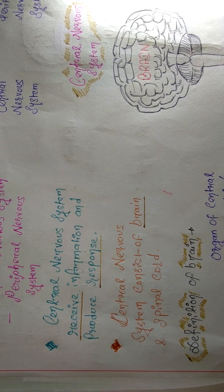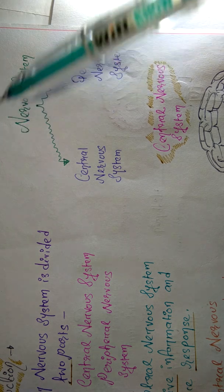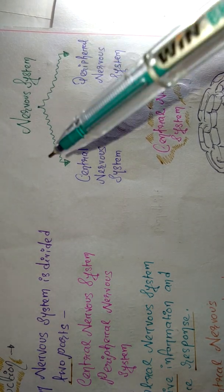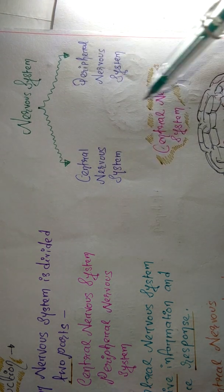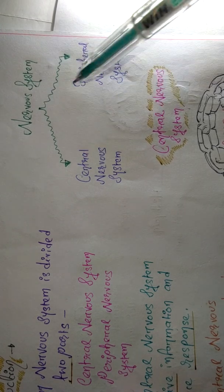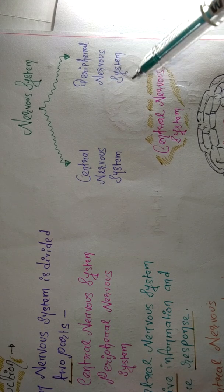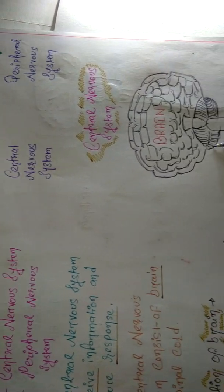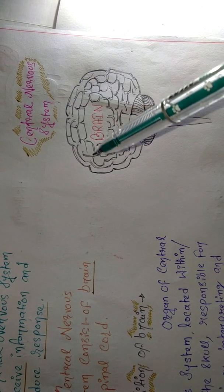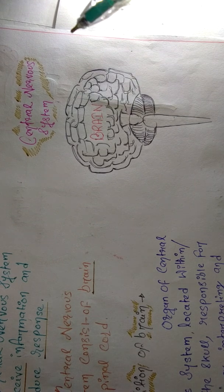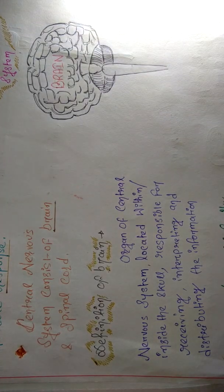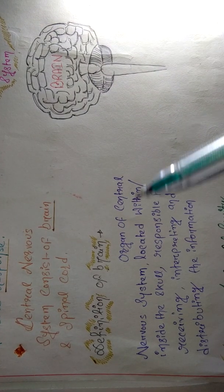The nervous system is responsible for receiving information, producing a response, and spreading that information. Central nervous system consists of brain and spinal cord — the mid portion of our body. They receive information and they produce a response. Today we will particularly study about the brain.